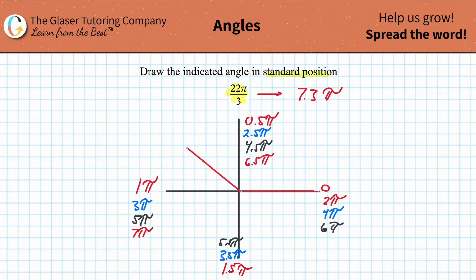Half pi. Full pi. 1.5 pi. 2 pi. 2.5 pi. 3 pi. 3.5 pi. 4. 4.5 pi. 5. 5.5 pi. 6. 6.5 pi. 7 and 1/3 pi.